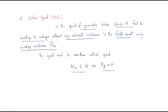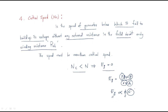Why must the speed be high? Generally, the generated EMF formula is: EG = P·Φ·N·Z / (60·A). Here P, Z, and 60 are constants, and Φ is also constant, so the generated EMF depends on both flux and speed. If the speed is low, the generated EMF will become low. The speed must be more than the critical speed.